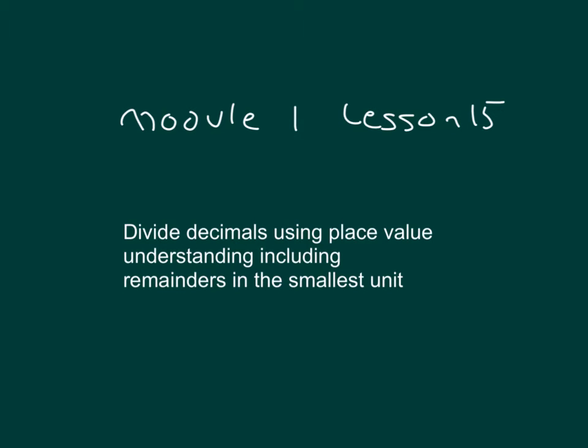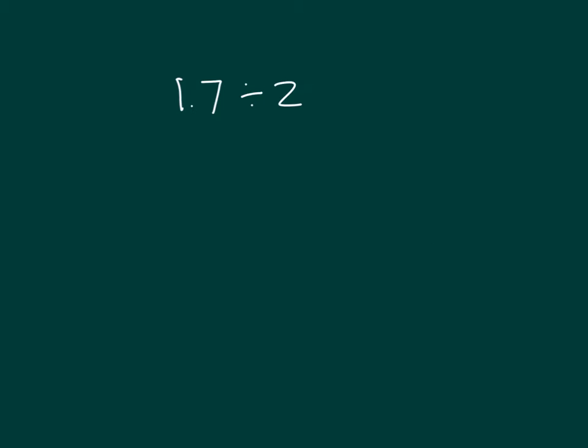Within this lesson, we'll divide decimals using place value understanding, including remainders in the smallest unit. Here we start with 1.7, and we're dividing by two. Ones, tenths, hundredths.